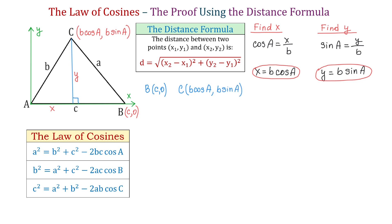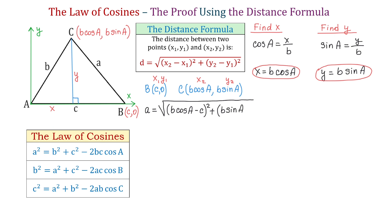Now we have two points: point B has coordinates (C, 0) and point C has coordinates (B cosine of angle A, B sine of angle A). According to the distance formula, letting the first point be x sub 1, y sub 1 and the other x sub 2, y sub 2, the length A — the distance between these two points — is the square root of (B cosine of angle A minus C) all squared plus (B sine of angle A minus 0) all squared. In the next step, we will raise both sides to the second power.